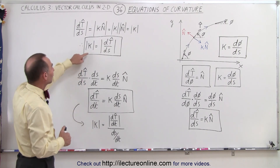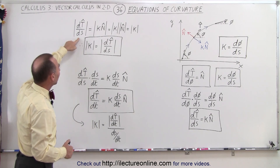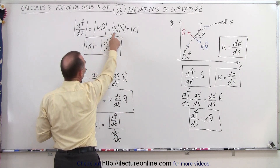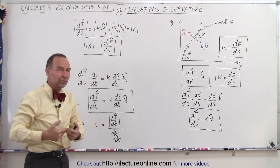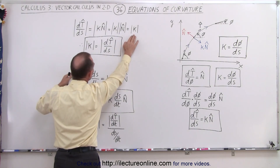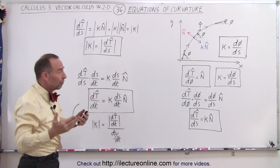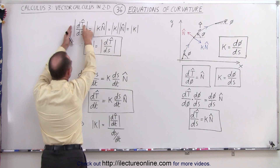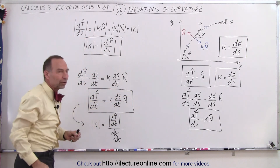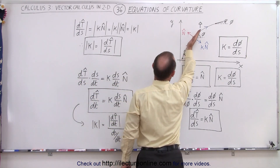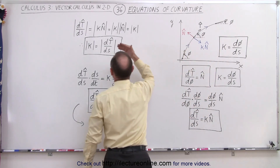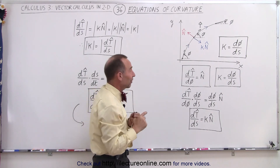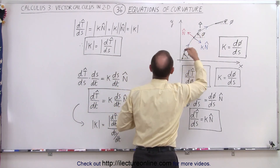If we want to know the magnitude of the curvature kappa, we can take dT/ds = κN and take the absolute value of both sides. On the right side, we get the absolute value of kappa times the absolute value of N. Since the absolute value of the unit normal vector equals 1, the absolute value of kappa always equals the absolute value of dT/ds. As the direction of the tangent unit vector changes, the angle changes accordingly, so the magnitude of curvature equals how much the direction of the tangent vector changes.